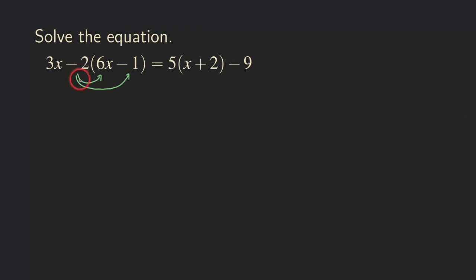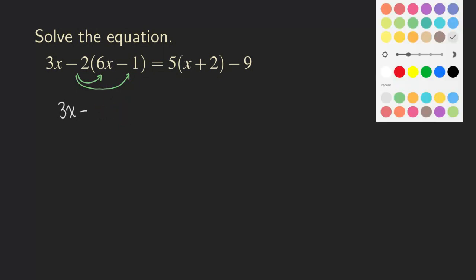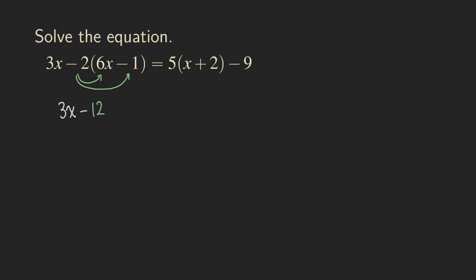So now let's put down what we have here. The 3x, we are not doing anything yet to it, so we're just going to copy it down. And then here we have negative 2 times 6x, which will be negative 12x. And what about negative 2 times negative 1? That will give us positive 2. Then I'll put down the equal sign — I usually try to align it up.